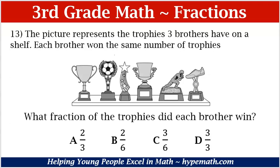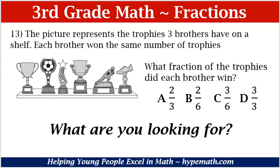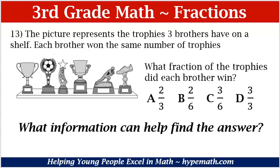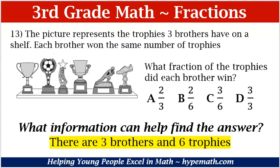A, two-thirds. B, two-sixths. C, three-sixths. And D, three-thirds. Looking at the number of trophies, we see that there are a total of six. What are we looking for? We are looking for the fraction of trophies that each brother won. What information can help us find the answer? The information we need is that there are three brothers, they have the same number of trophies, and there are six total trophies.